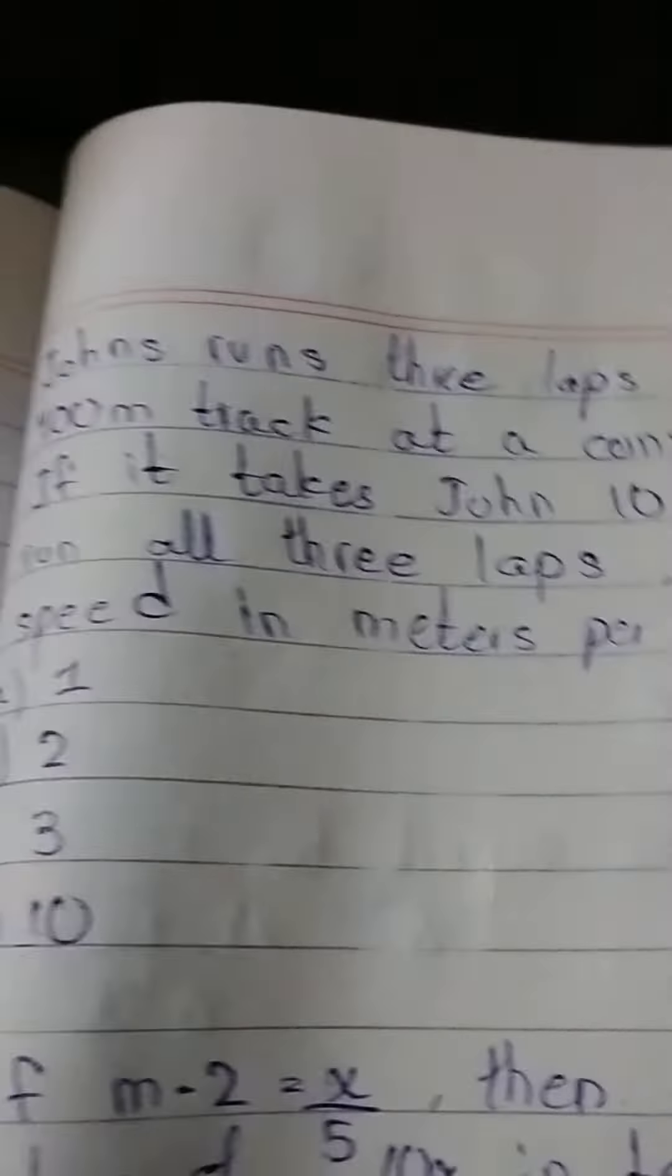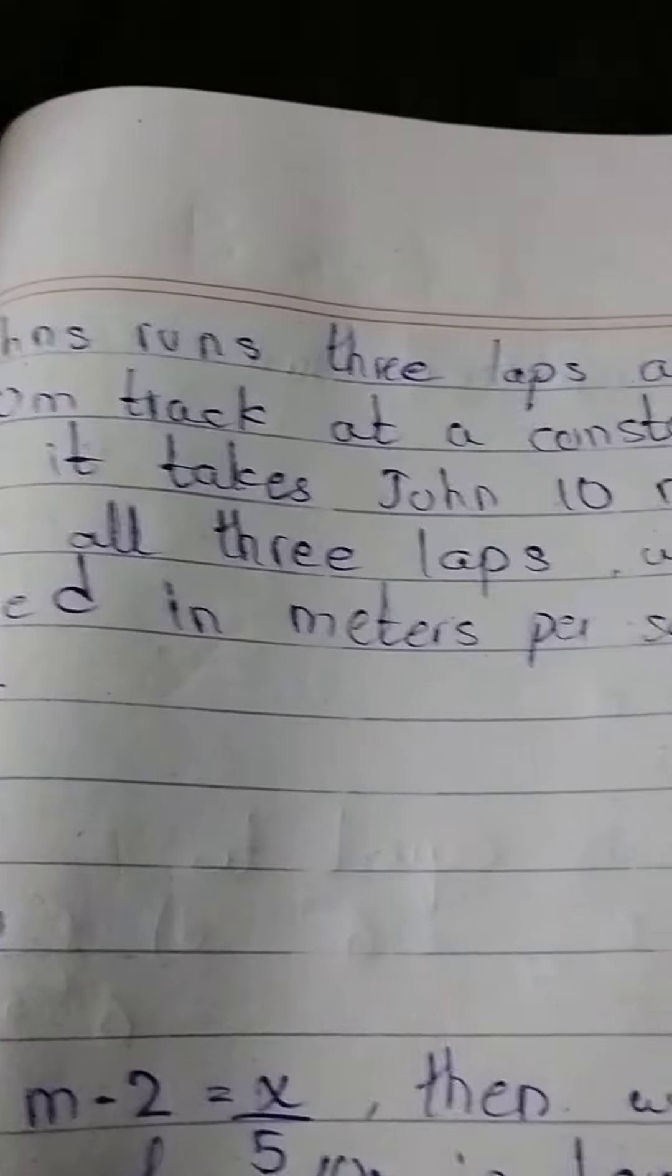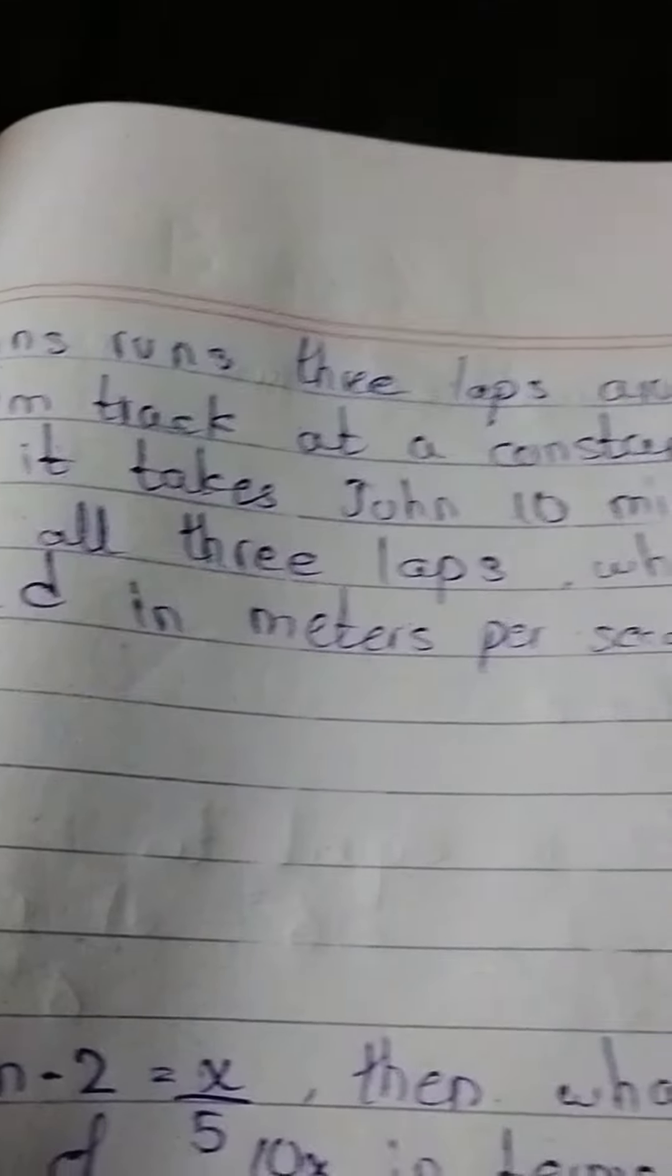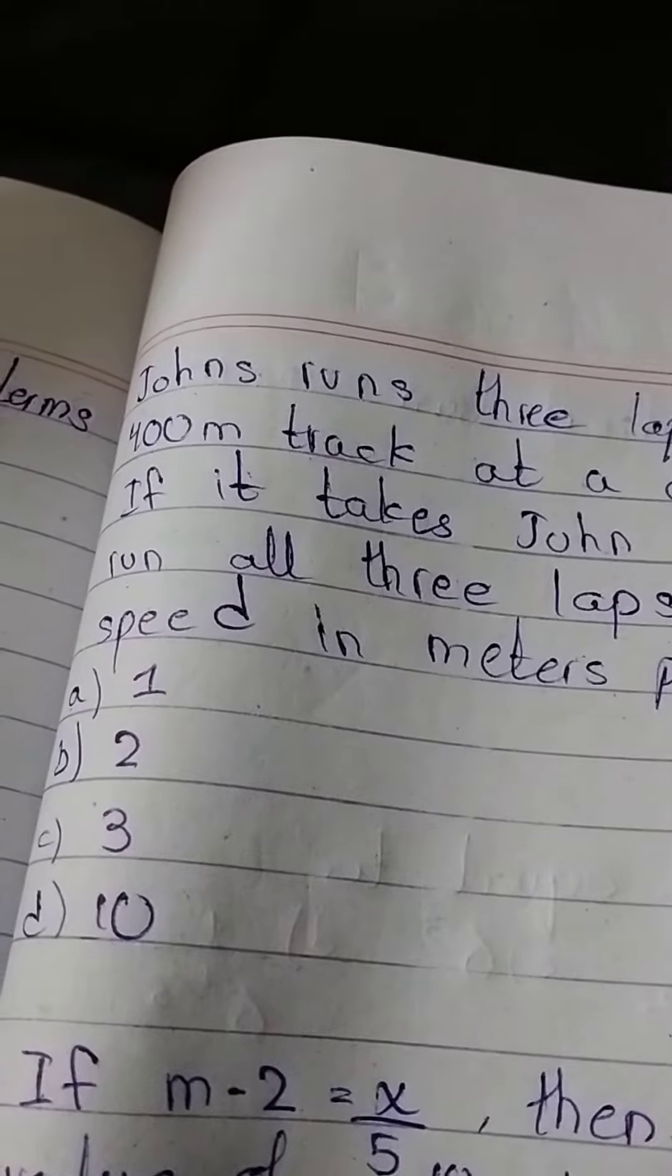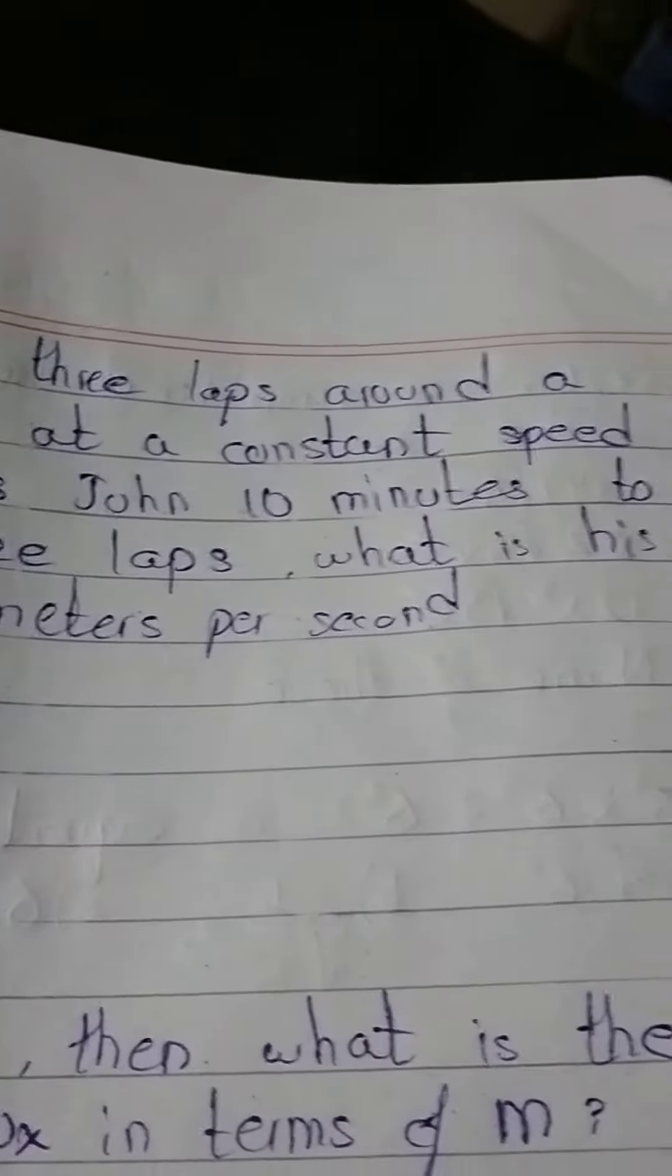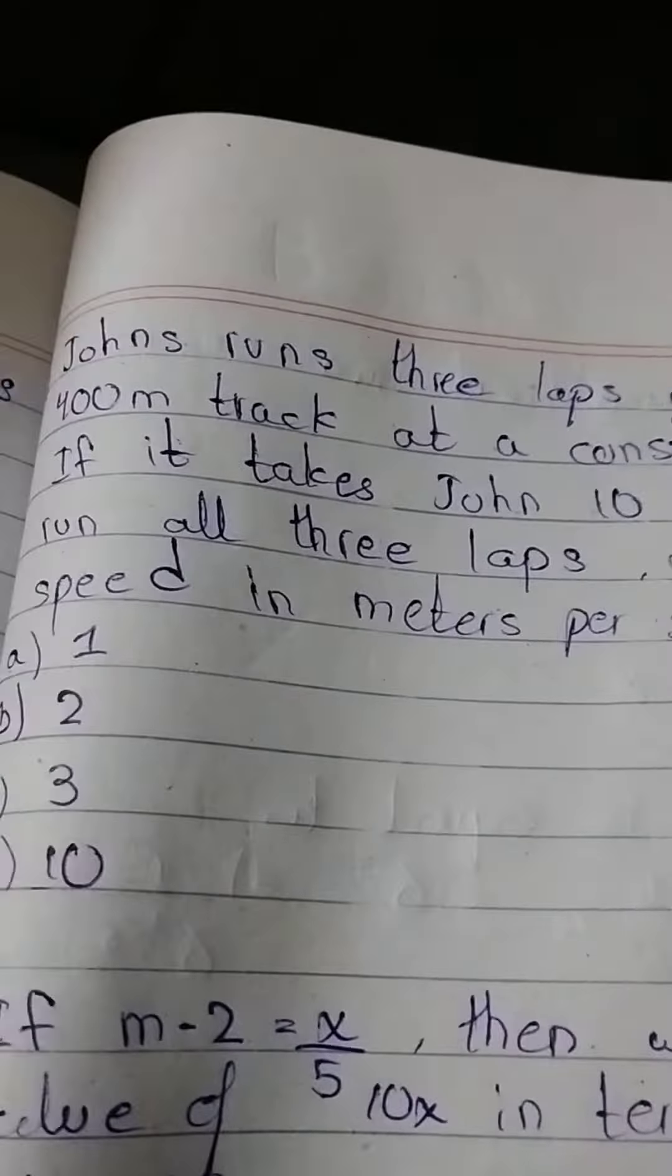John runs three laps around a four-meter track at a constant speed. If it takes John ten minutes to run all three laps, what is his speed in meter per second?